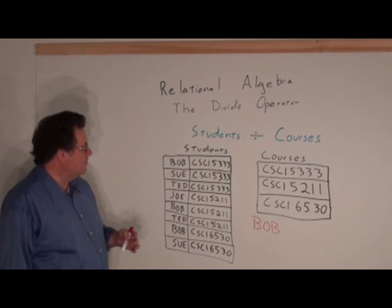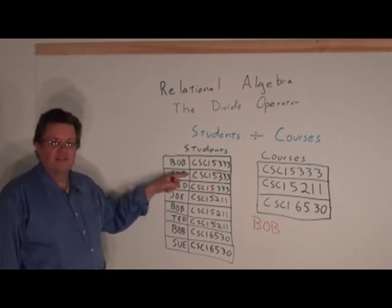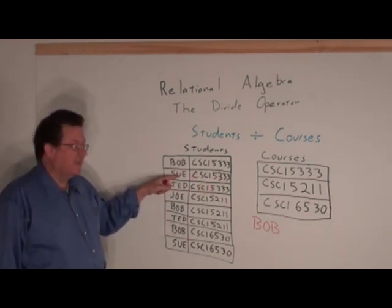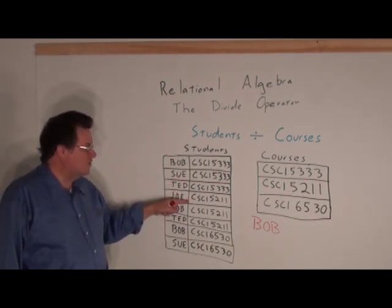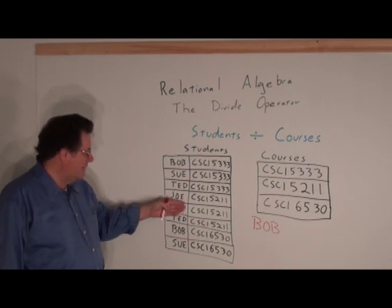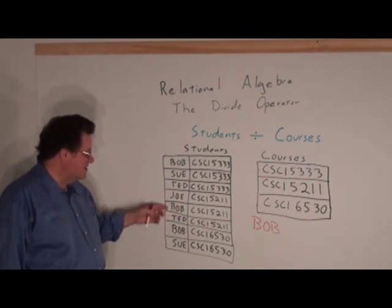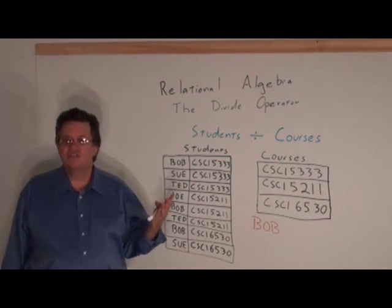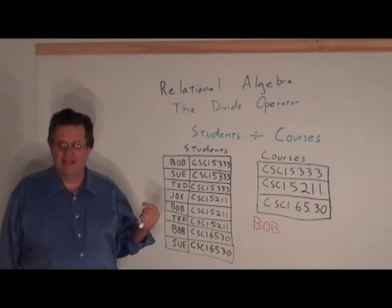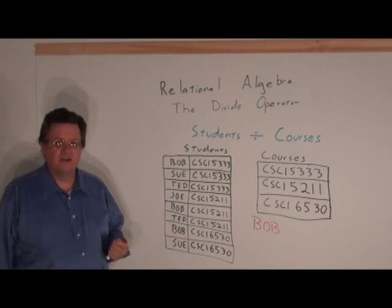Well let's go through a couple more. Here's CSCI 5333 maps to Sue. So Sue's taken that class. Now we come down to CSCI 5211. There's no mapping to Sue so she's not taking the class, and Sue is taking the 6530. So Sue is taking two out of the three classes here. But she would not be in our solution set.